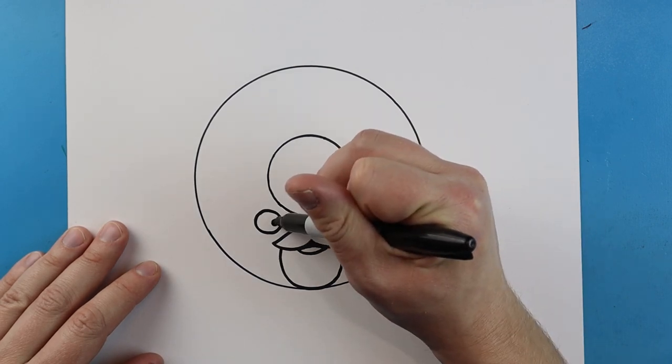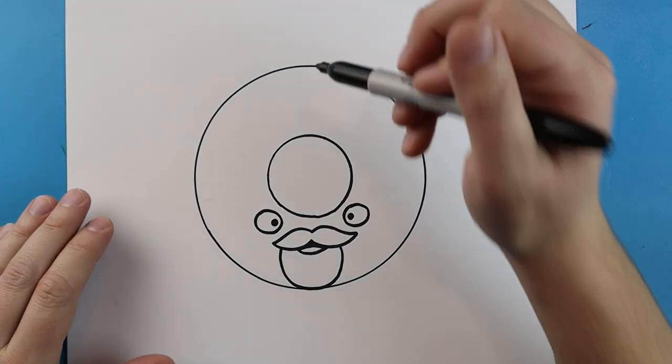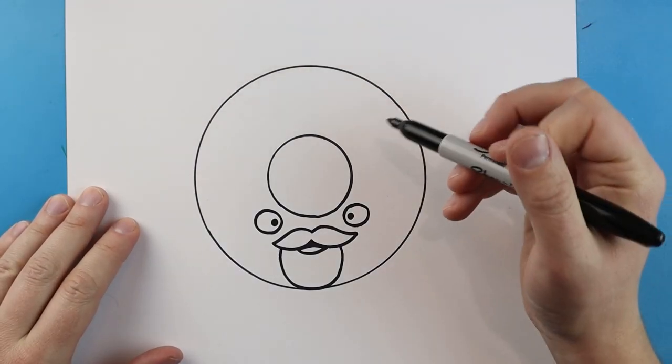I'm going to put a little black dot inside each one. Now up here we want to make our little Santa hat.